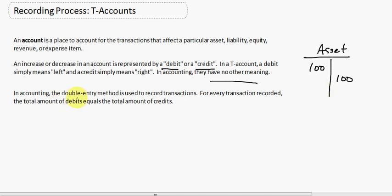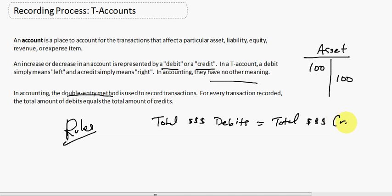In accounting, the double entry method is used to record transactions. For every transaction recorded, the total amount of debits equals the total amount of credits. So let's remember these rules here and just memorize them throughout the semester and through your career as an accounting student and eventual accountant.